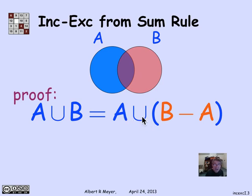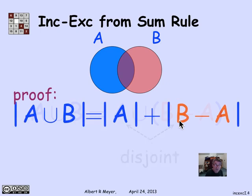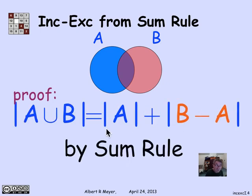These are the points in A, and these are the points in B that are not in A—two disjoint sets whose union is A∪B. Since they're disjoint, the size is just |A| + |B-A|. We conclude by the sum rule that |A∪B| = |A| + |B-A|.